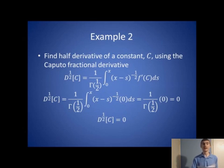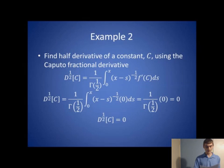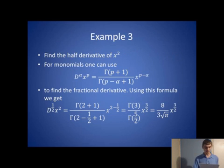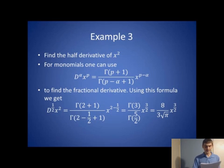In the second example, we find the half derivative of a constant using the Caputo fractional derivative to demonstrate the difference between the two definitions. From the formula, we get f prime of c inside the integral, but the derivative of a constant is zero, making the integral zero. Therefore, the half derivative of a constant using the Caputo fractional derivative equals zero. For the next example, we find the half derivative of x squared using the formula for the arbitrary derivative of a monomial, giving gamma(3) over gamma(5/2) times x to the three-halves, which equals 8 over 3 root pi times x to the three-halves.